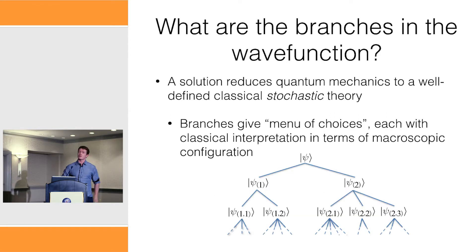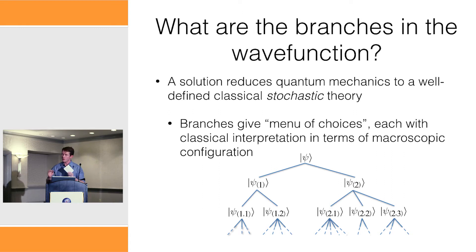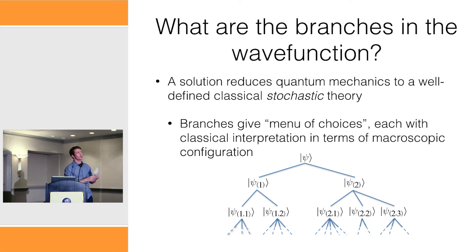And I think it would remove a persistent vagueness from quantum mechanics. If you could get a solution to this — a time-dependent decomposition of the wave function into orthogonal branches with a classical interpretation — it would reduce quantum mechanics to a well-defined stochastic theory, where the branches at every given time would give a menu of choices, each with a classical interpretation in terms of macroscopic configurations.